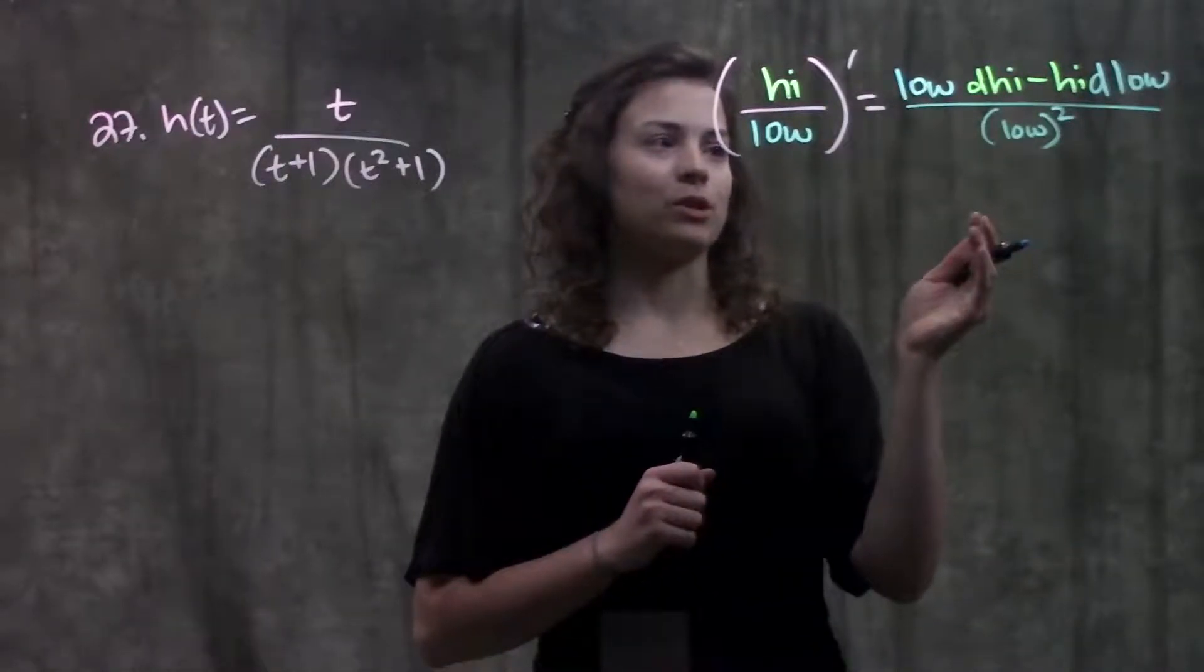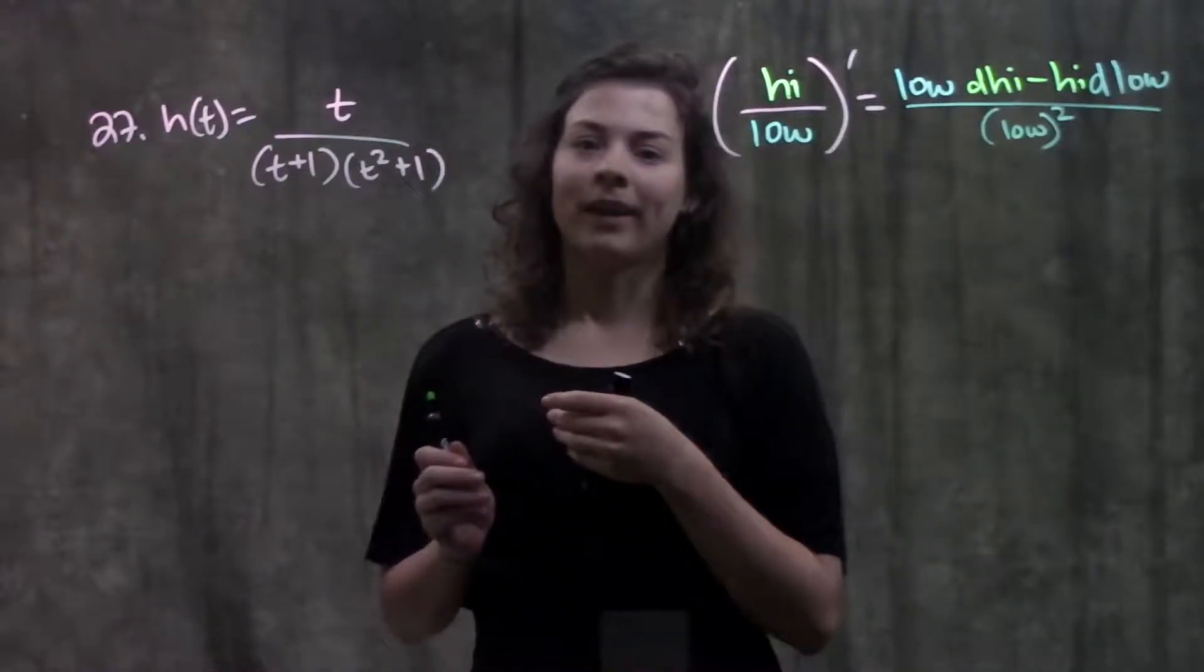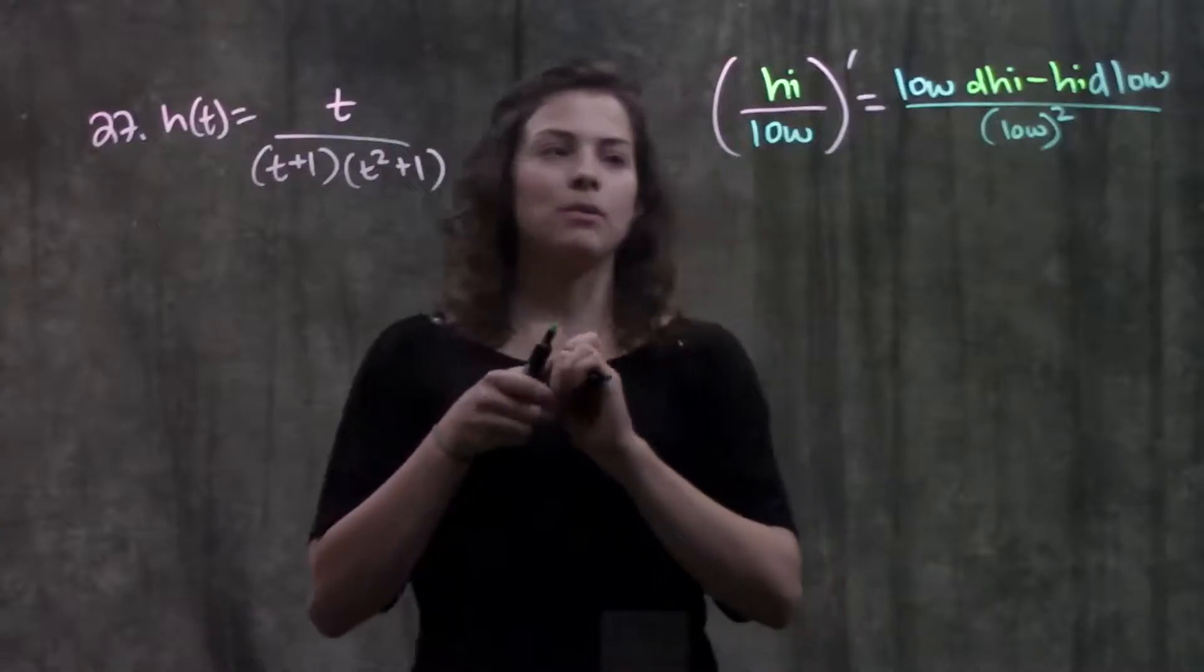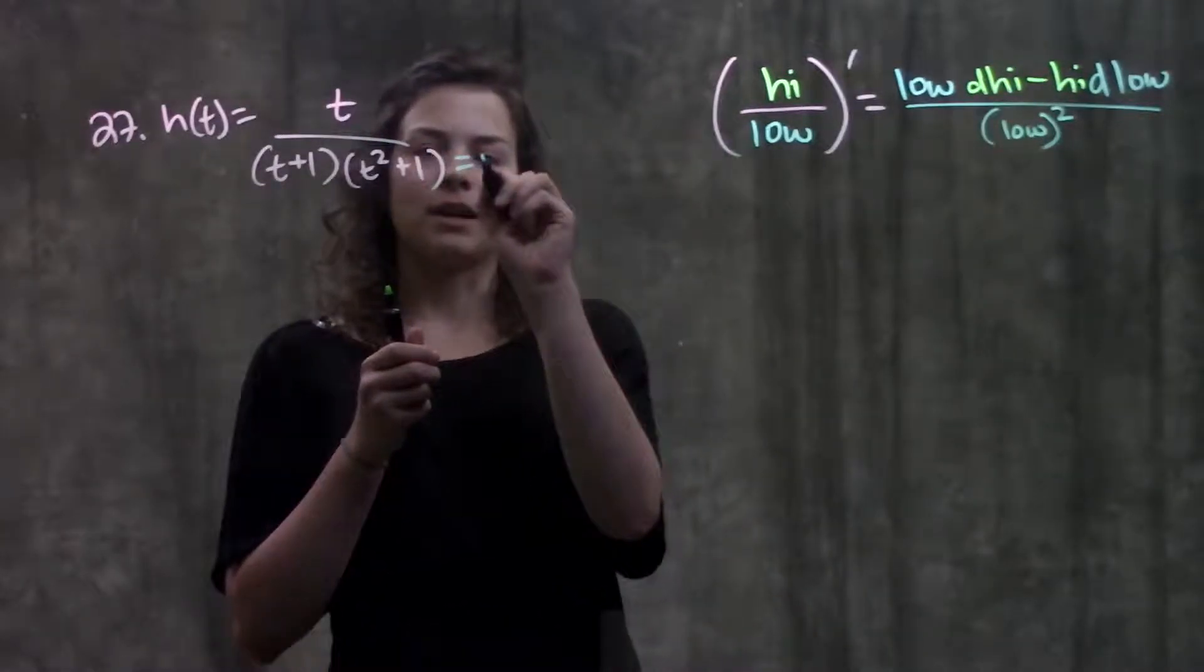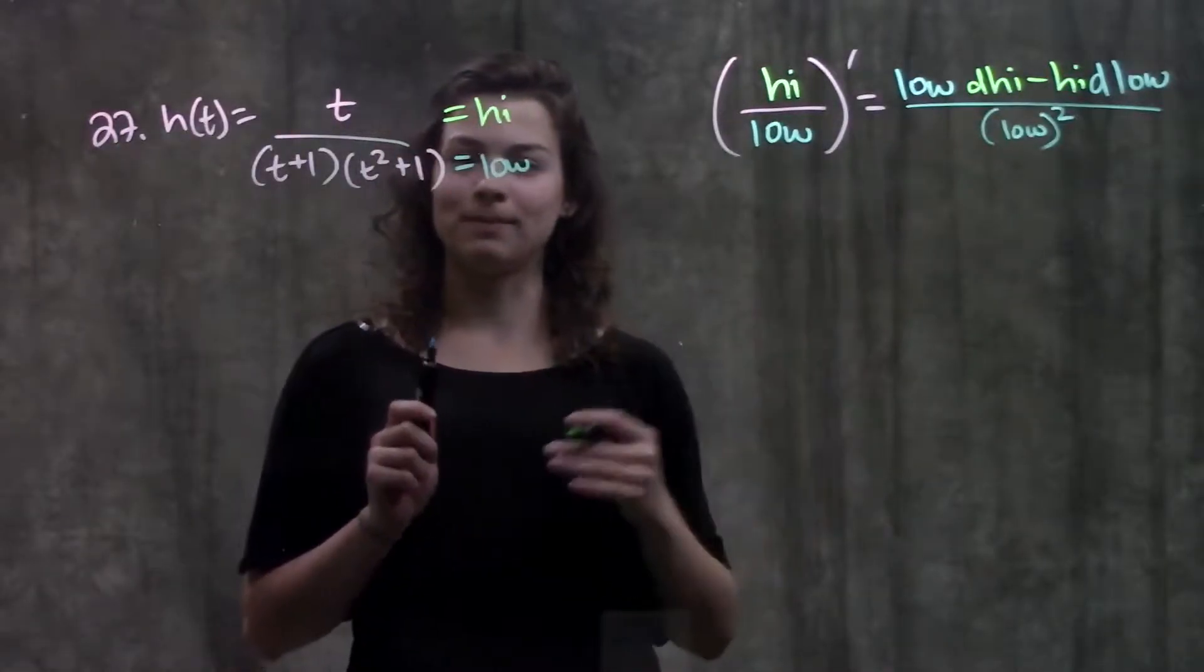Okay, so here's our pattern for quotient rule. I'm just going to apply this, plug everything in, for this function here. So before I do that, I'm first going to label my low and my high. My denominator is my low, my numerator is my high. And now I just follow this pattern.